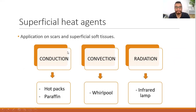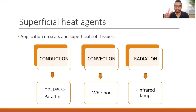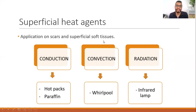Physical agents that promote heat in our body can be classified as superficial heat agents or deep heat agents. Superficial agents induce an increase in tissue temperature up to about two centimeters deep. They are applied mainly on scars and superficial soft tissues, including skin, superficial muscles, and superficial tendons.